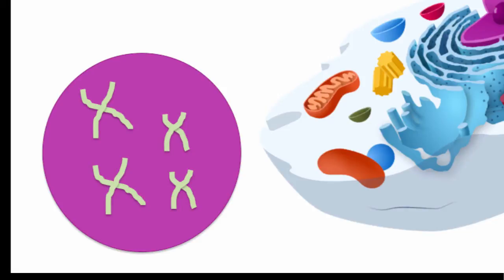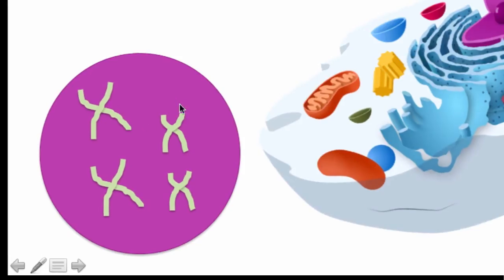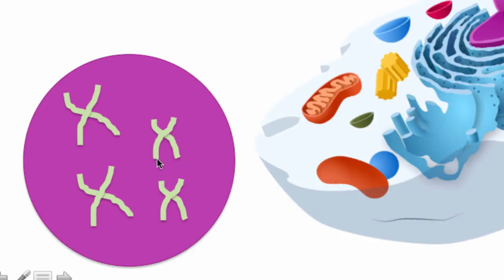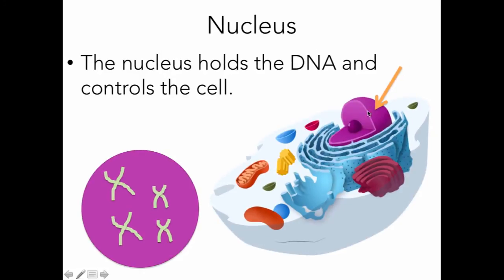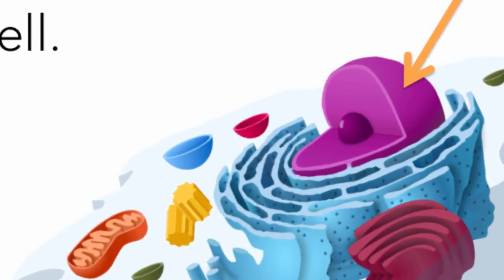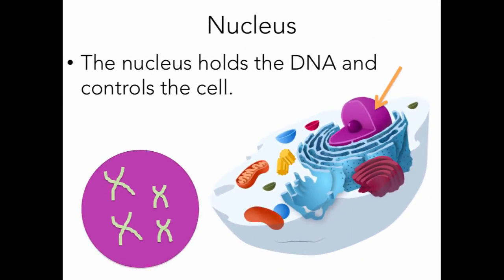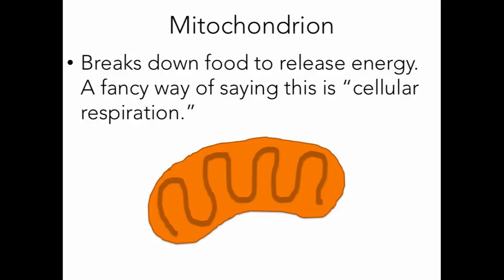The next cell part is the nucleus. The nucleus is like the boss of the cell — it holds DNA and controls the cell. The DNA inside the nucleus comes in two forms: the chromosome form, which is packed-up DNA shown as X-shapes, and the chromatin form, which is loose, squiggly DNA. The nucleus appears as the big purple ball in this diagram, though the color is just for illustration purposes.